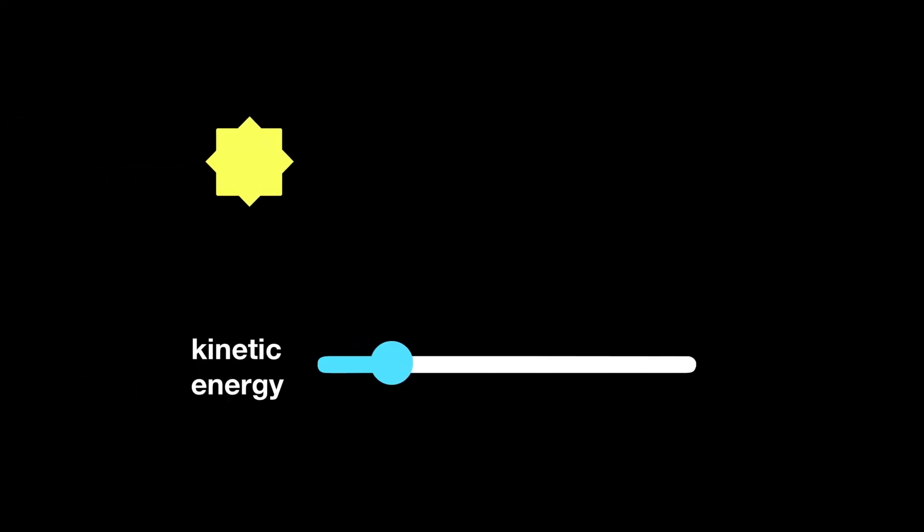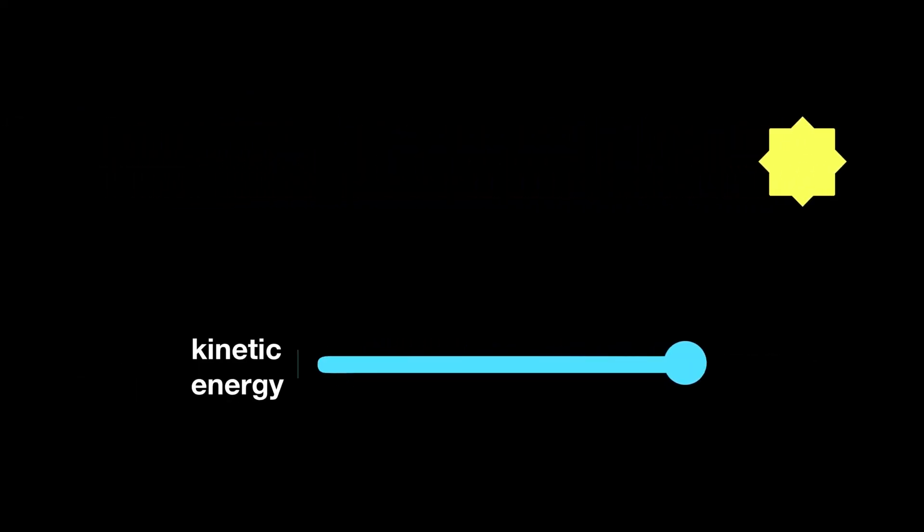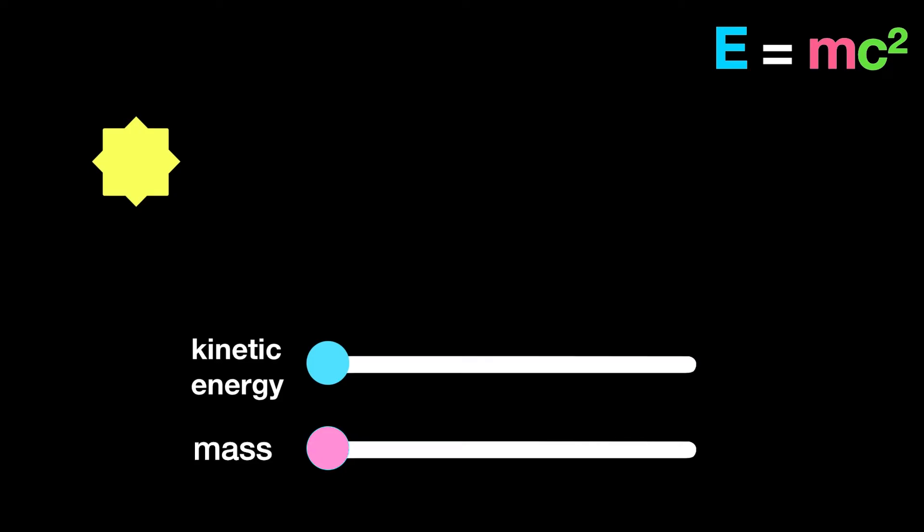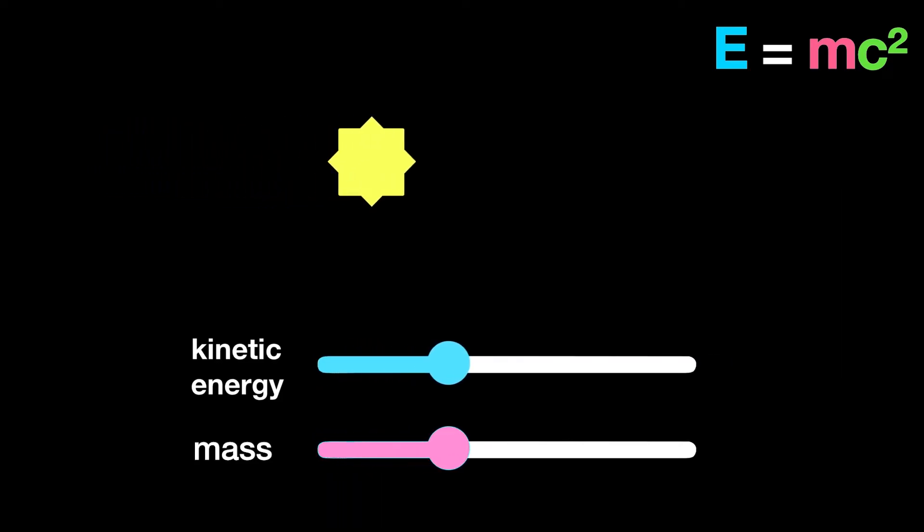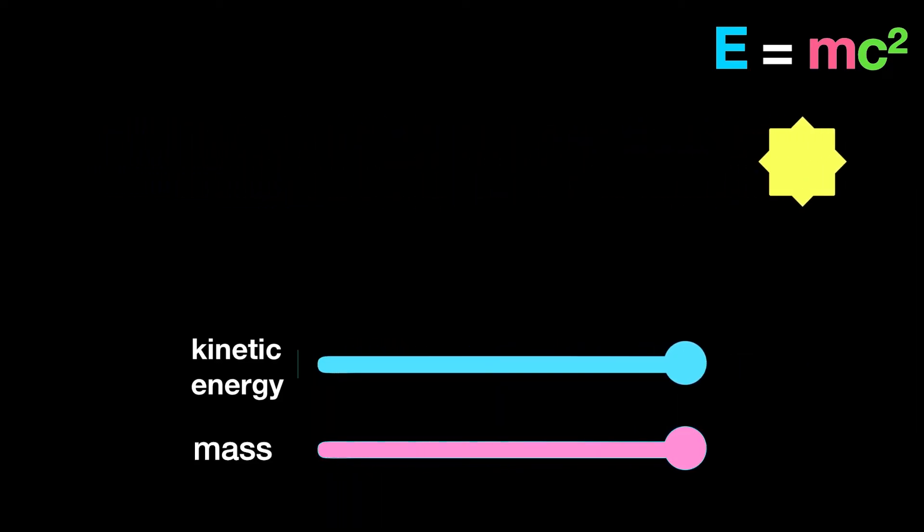As an object moves faster, it gains kinetic energy. According to E equals mc squared, its mass also has to increase to conserve the total energy. Don't worry, this mass increase is negligible at everyday speeds.